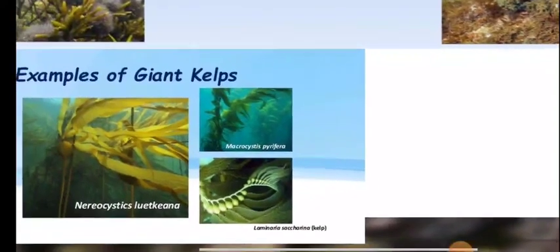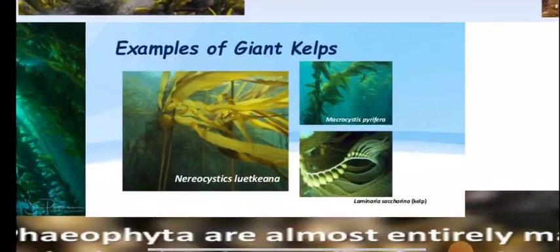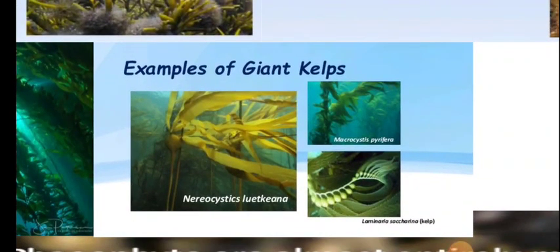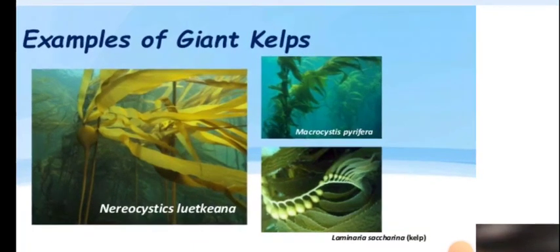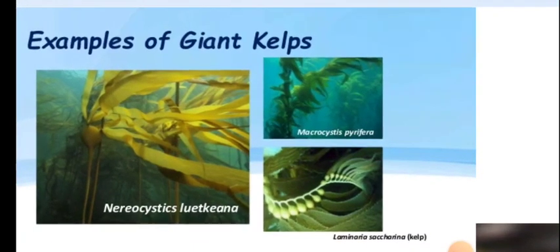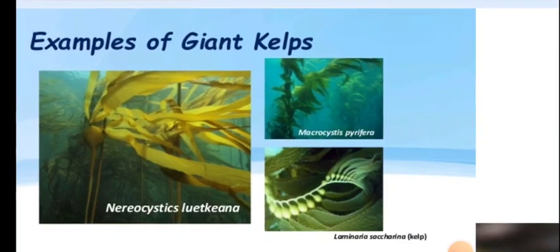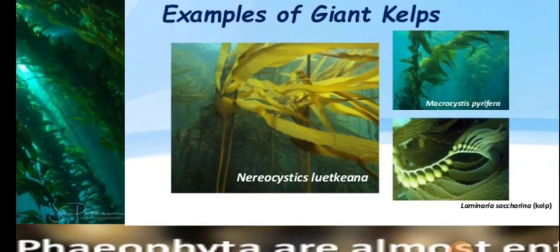Members of Phaeophyta are called giant kelp. Kelp looks like a forest. The genus Nereocystis luetkeana is the largest genus. The second genus is Macrocystis, and the third genus is Laminaria. Laminaria is commonly called kelp.